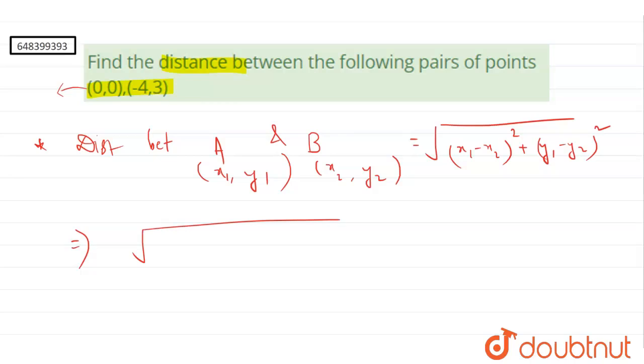So, 0, 0 is x1, y1 and minus 4 will be x2 and 3 will be y2. So,